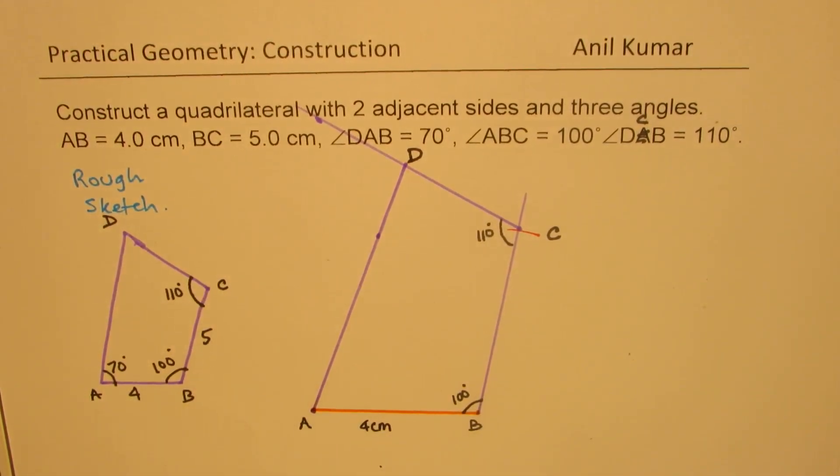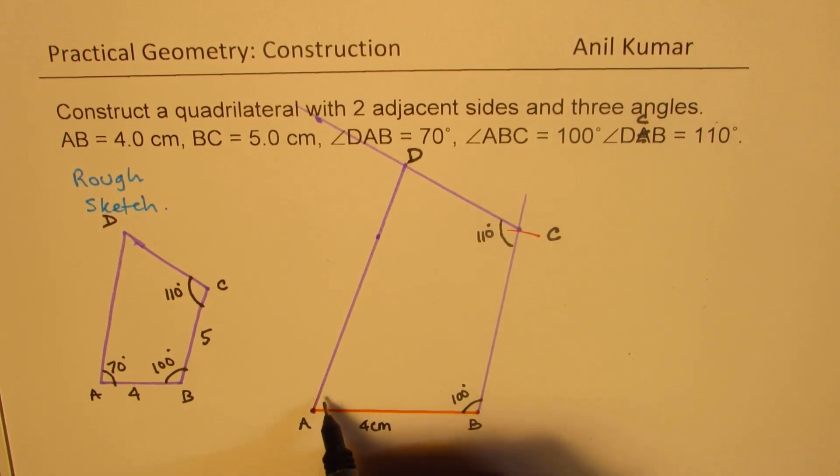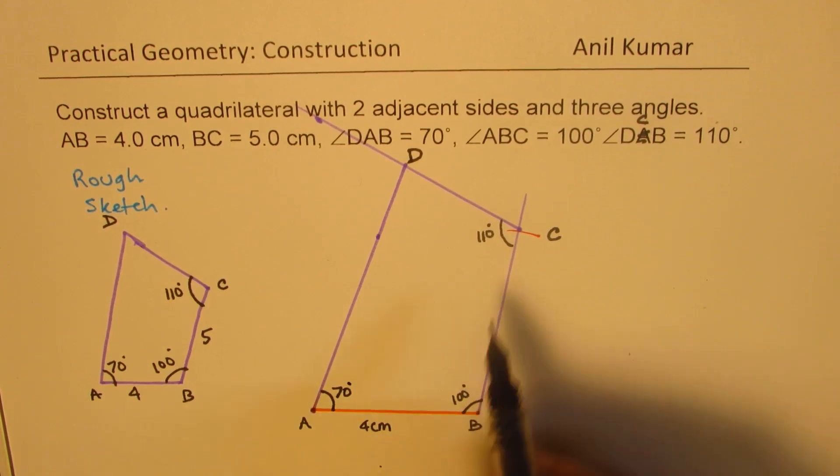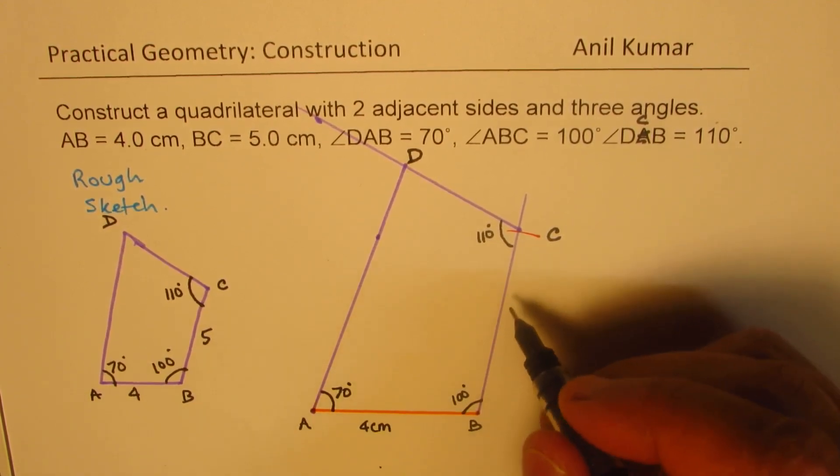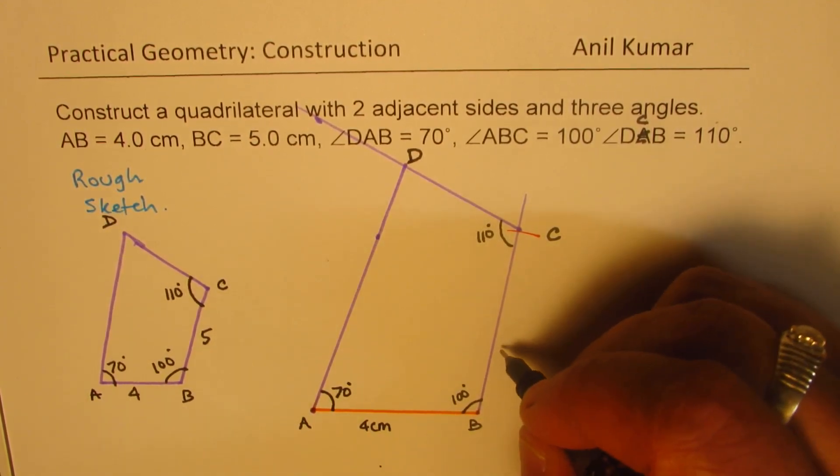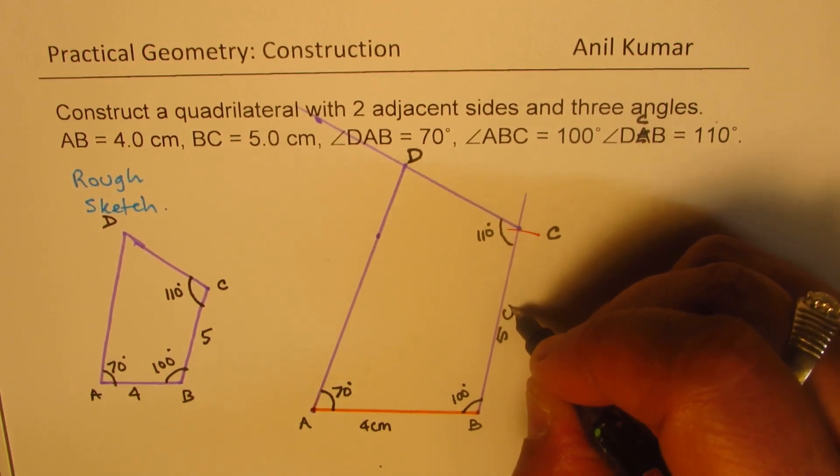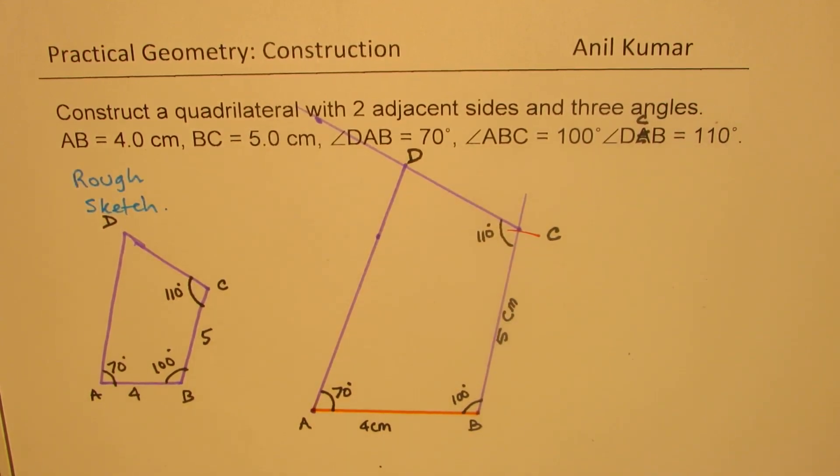So that is how we could construct the quadrilateral with given angles, which are 70 degrees, 100 degrees, and 110 degrees, and two dimensions of the adjacent sides: 5 centimeters for BC and 4 centimeters for AB.